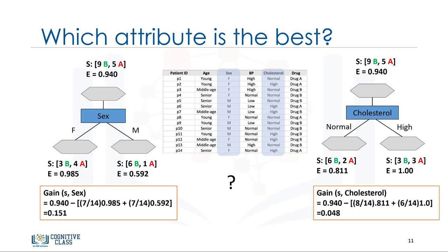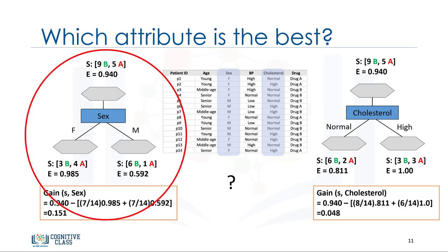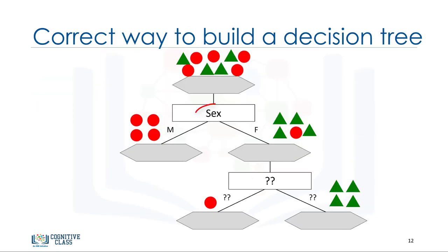We can calculate the information gain of the tree if we use cholesterol as well — it is 0.048. The sex attribute has higher information gain, so we select it as the first splitter. What is the next attribute after branching by the sex attribute? We repeat the process for each branch, testing each of the other attributes to continue reaching the most pure leaves. This is the way you build a decision tree.